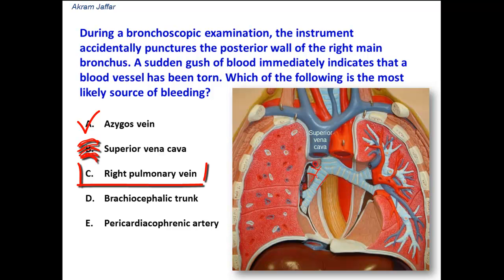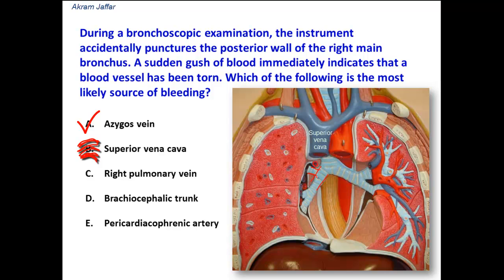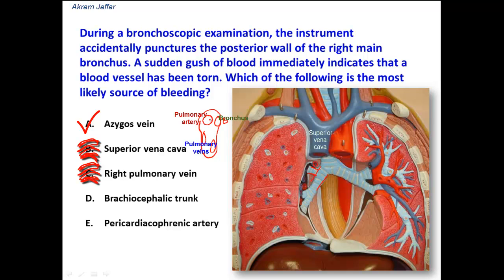Option C: right pulmonary vein. The pulmonary veins are located either anteriorly or inferiorly, because at the hilum of the lung, if we imagine this is the hilum, we have the artery above, the bronchus behind, and the veins anteriorly and inferiorly. So the right main bronchus has the artery and pulmonary veins located anteriorly and inferiorly — not posteriorly.